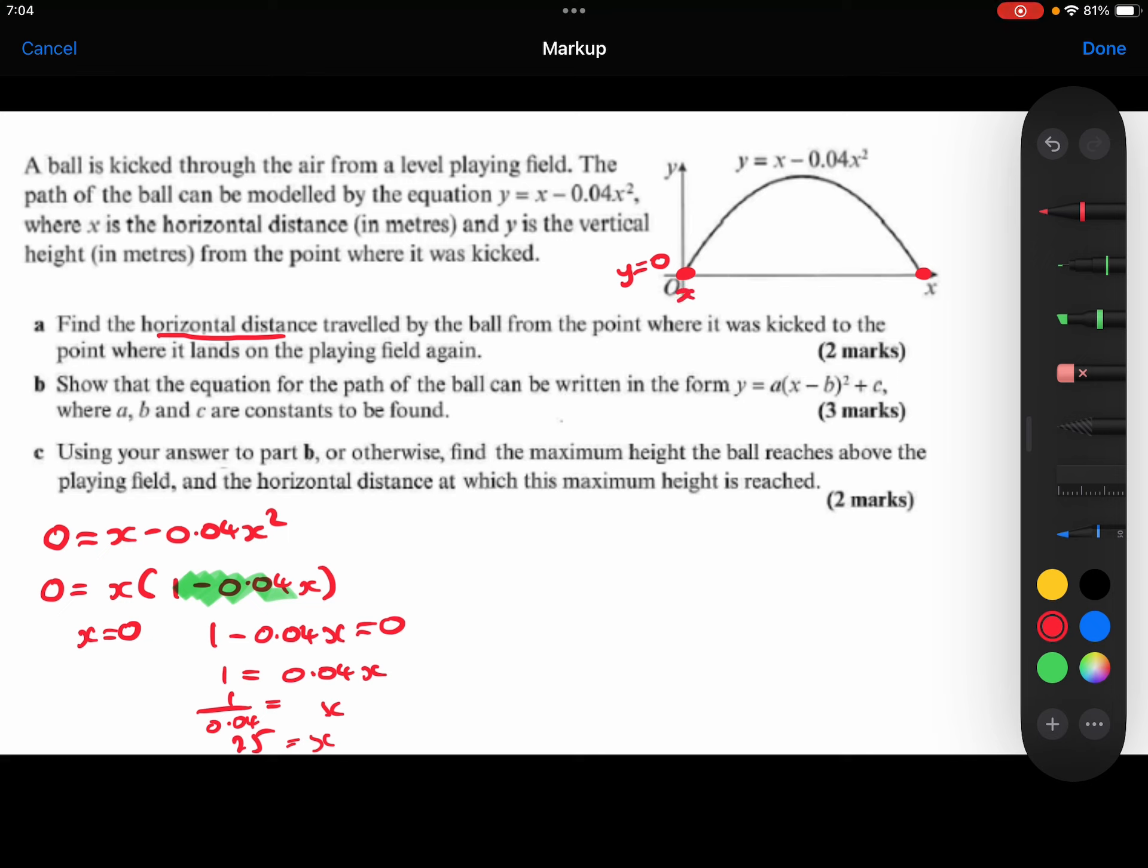So this point here, we know x is 0. This point here, we know that x is 25. So we know that it has traveled 25 meters horizontally. So that's part A.